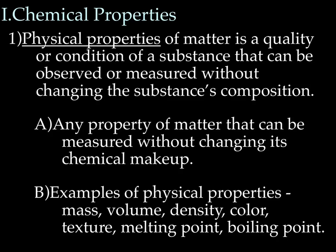An overview of chemical properties — to do that we need to compare them with physical properties. A physical property of matter is a quality or condition of a substance that can be observed or measured without actually changing the substance's composition. So after observing it, measuring it, whatever, you still have the same thing you started with. Examples of physical properties include mass, volume, density, color, texture, melting point, and boiling point. If I take my weight, I'm measuring that, but it doesn't change my size — that's what is meant by not changing the substance's composition.